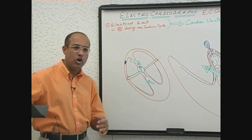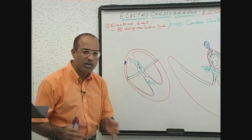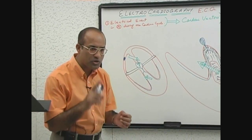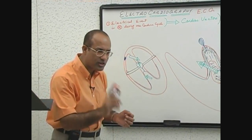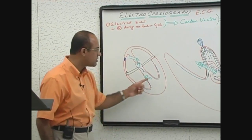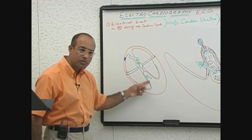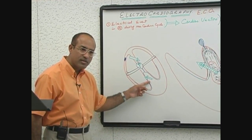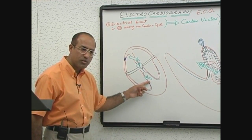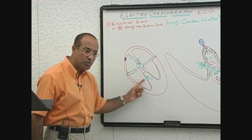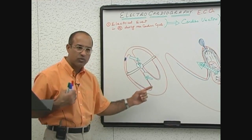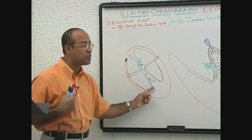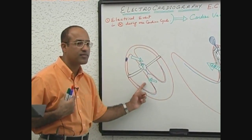The next event is the onset of depolarization of the ventricle. The first portion of the ventricle which undergoes depolarization is the septum of the ventricle. Septal depolarization produces a small vector moving rightward and upward, and it is a very fast vector.